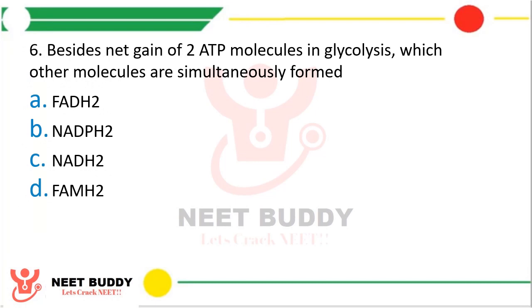Question 6: Besides the net gain of two ATP molecules in glycolysis, which other molecules are simultaneously formed — FADH₂, NADPH₂, NADH₂, or FAMH₂? The correct answer is option C — NADH₂ is also formed alongside the net gain of two ATP in glycolysis.